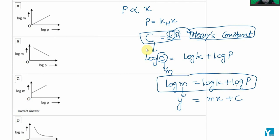Log P refers to the x term, and log k, which is Henry's constant, refers to c. So on the y-axis we have log M, and on the x-axis we have log P.